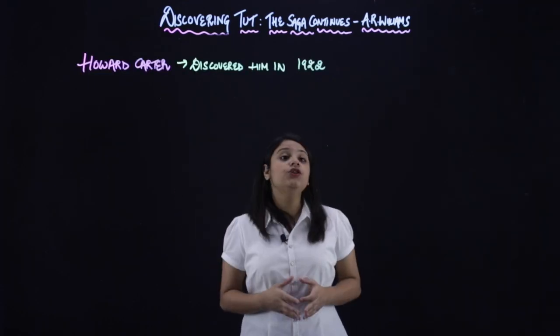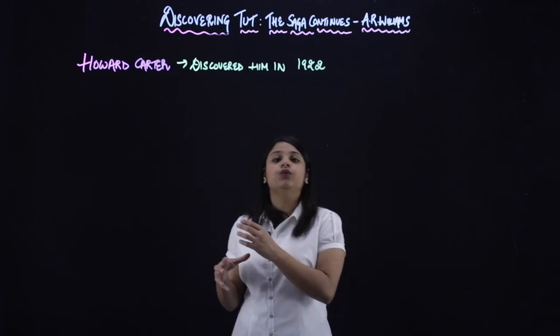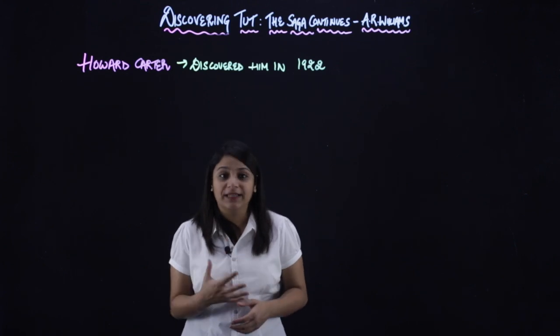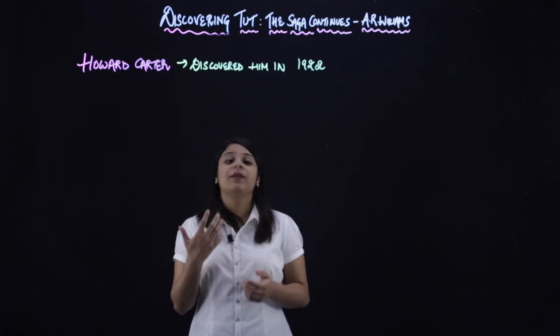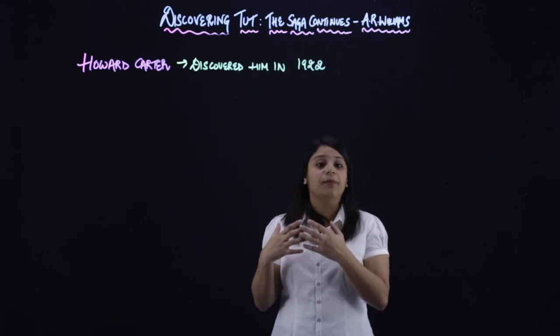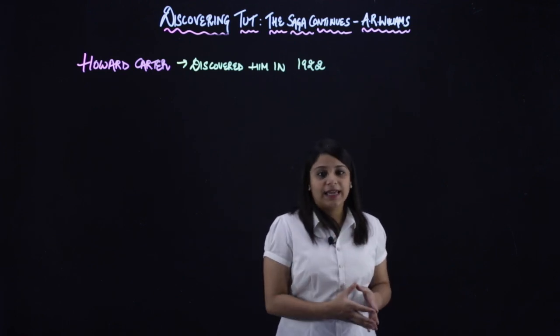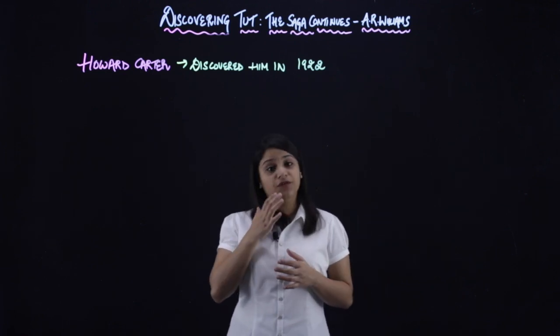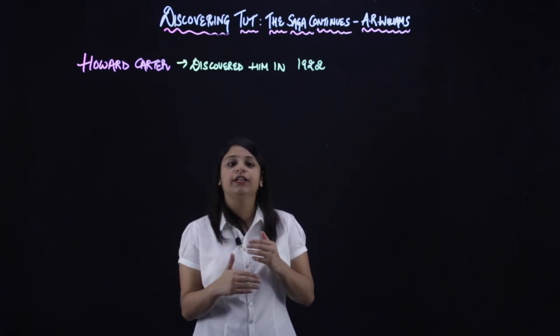So he was the one who discovered King Tut. And why did he do this, because he was a British archeologist. Archeologist are those people who look at old things, study them, find old things that are from ancient times, and study about them. And that is why, because he was interested, so he discovered the mummy of King Tut. Now, what he found, so there are things that he revealed.